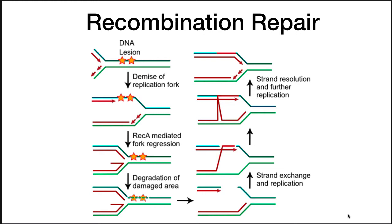Another system is recombination repair. This comes into play when a cell is actively replicating and encounters a region with a serious DNA lesion, but the complementary copy still has the correct base pairs. The polymerase stops, there is a retrograde fork regression — it goes backwards — degradation of the damaged area, and then a strand exchange. The strand shown in red has been copied from the region damaged on the other side, so it has the correct bases. That strand is brought over, copied through, and after a strand exchange, replication continues. In this way, if there's only damage to one strand of the DNA double strand, you can use recombination repair to fix it.